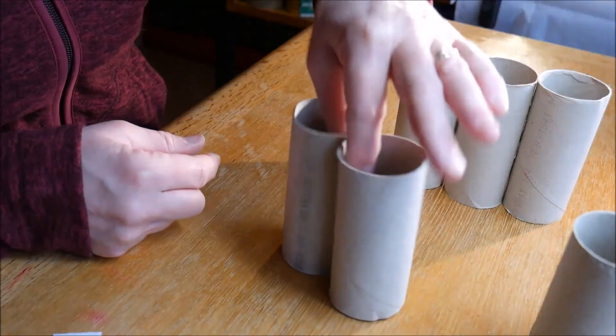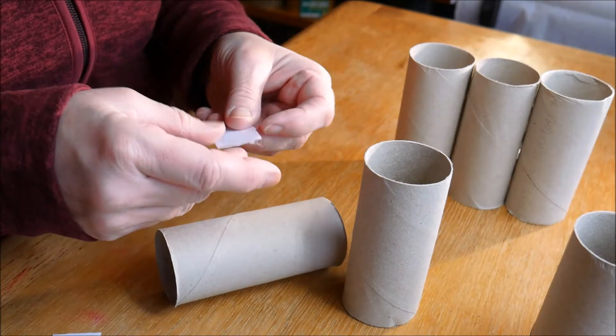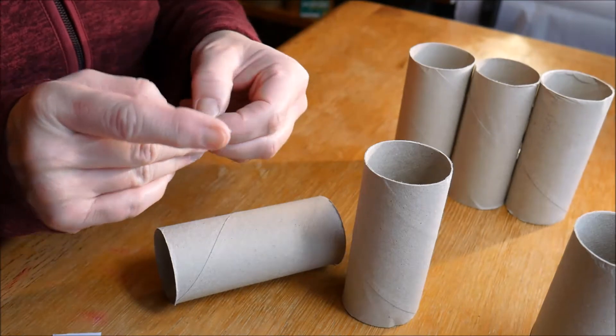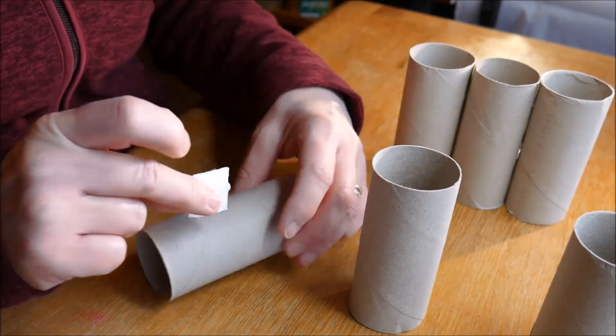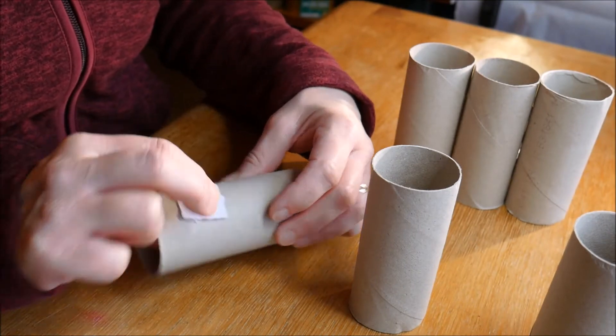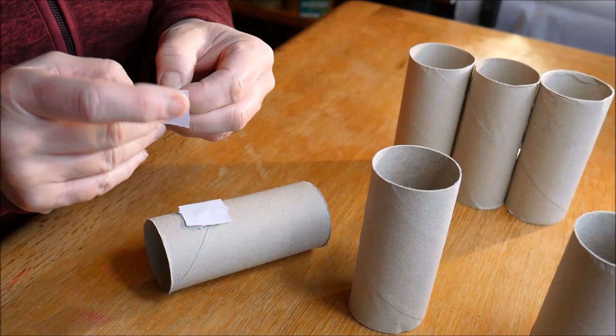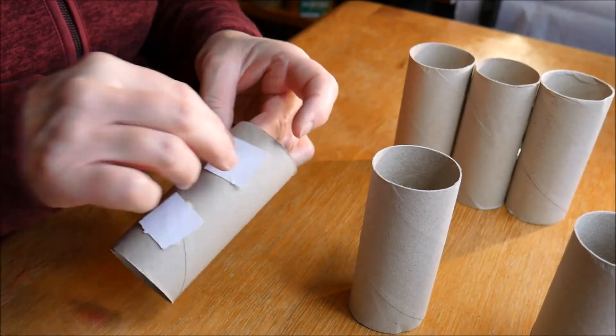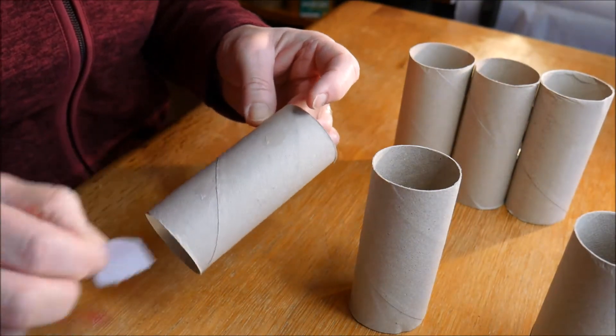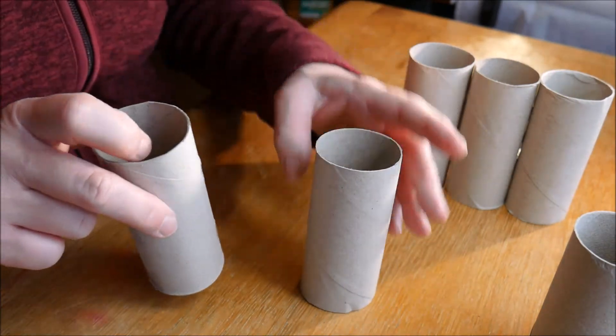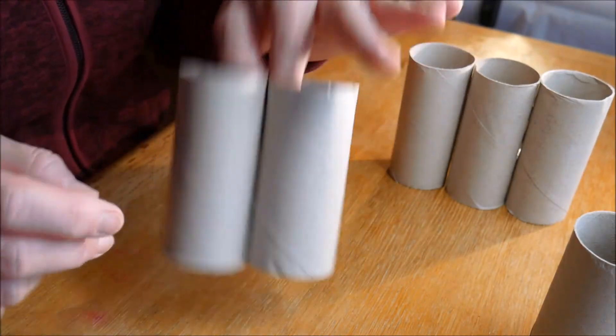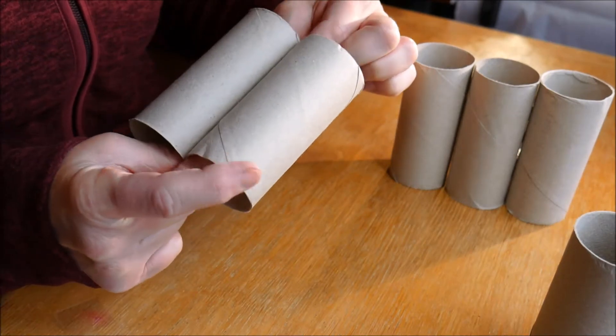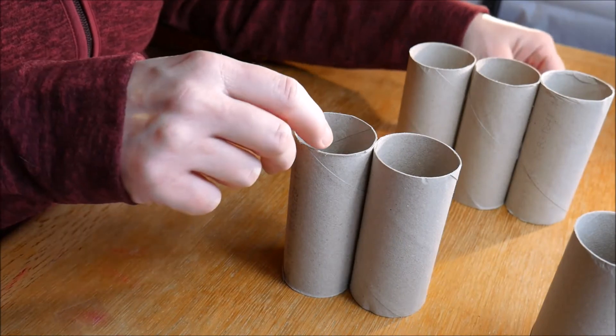The next layer is two toilet rolls. So again stick two glue dots in a line. There's one and there's the second one. As I said this is a really simple project so you can do it with children or adults. It doesn't really matter. You can make one, you can make three, you can make as many as you like.